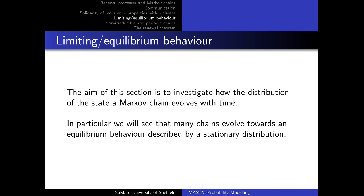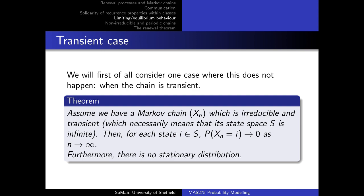Let's move on to a new section about limiting behavior. We're finally going to look at what happens when n tends to infinity and examine the distribution of the state of your chain. Usually this converges to a stationary distribution. First, let's start with the cases where there is no stationary distribution — the transient cases. Here's a theorem: if the Markov chain is irreducible and transient, then the probability of being at state i will converge to zero as n tends to infinity.